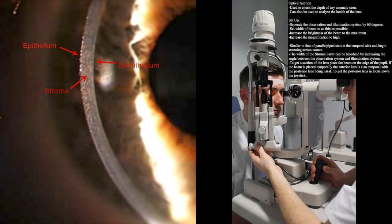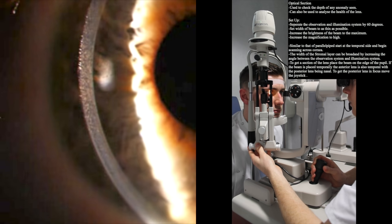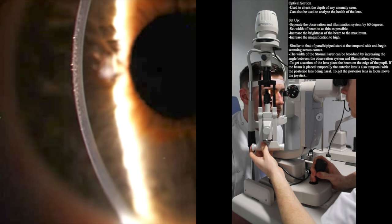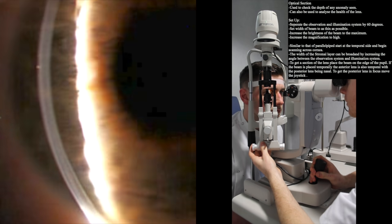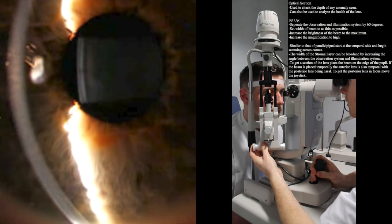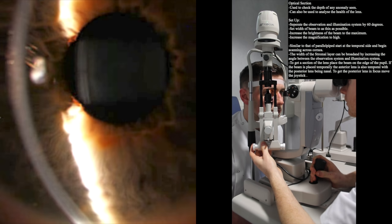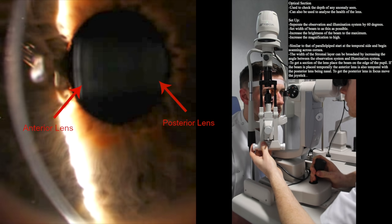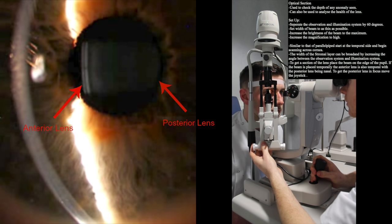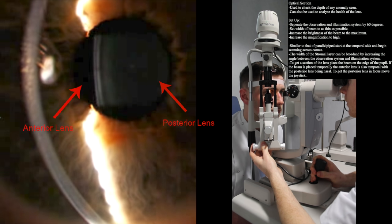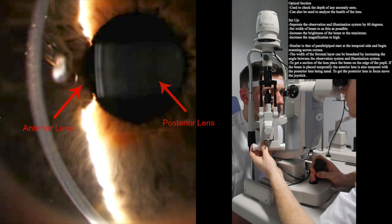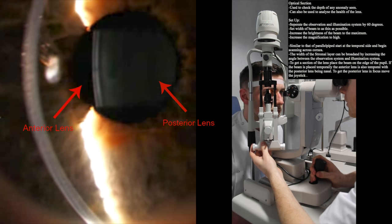A section of the lens can also be obtained using this technique. Move the beam over the pupil and a section of the lens can be found. If the illumination system is positioned temporally, the anterior lens is also viewed temporally with the posterior lens being blurred nasally.